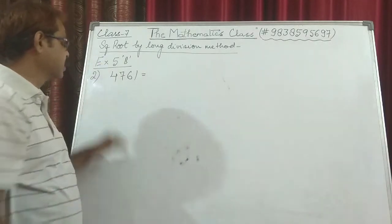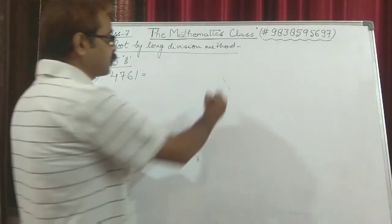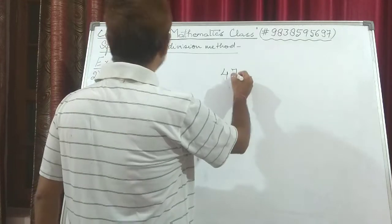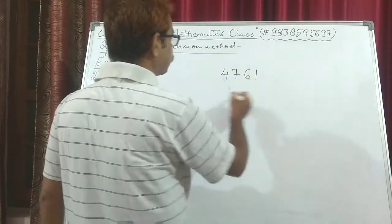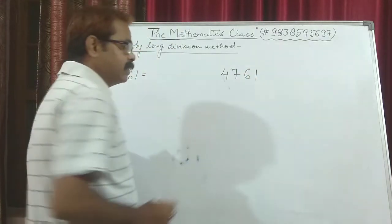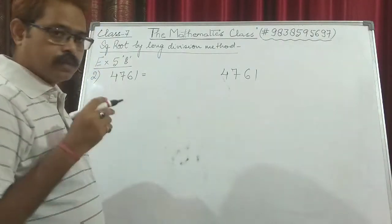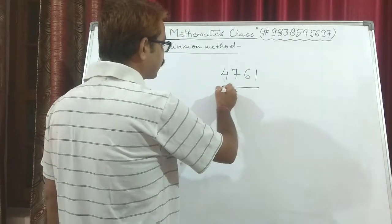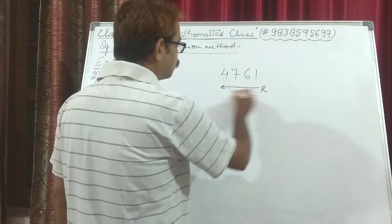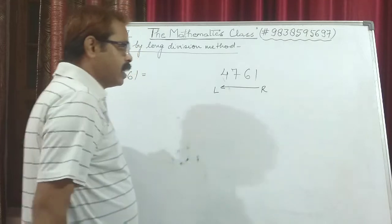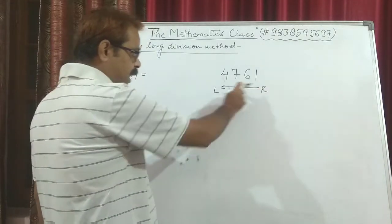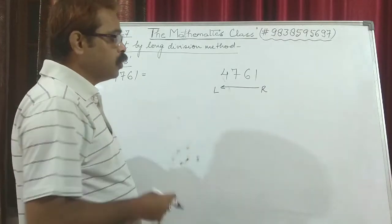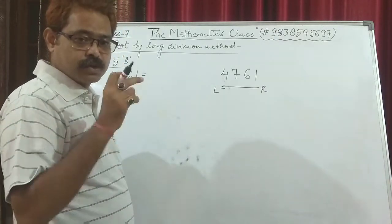We have taken the second question: 4761. We have to find the square root of 4761. What we do is move from right to left, and while moving from right to left, we keep on making pairs of 2 digits.